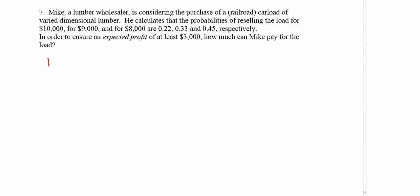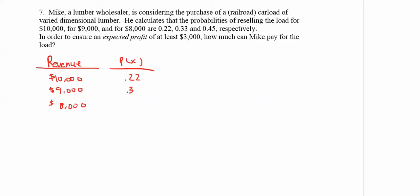So we're going to set up an expected revenue table. Let's list the different revenues we can have: $10,000, $9,000, or $8,000, and the probabilities associated with those are .22, .33, and .45. Notice that when you add up those probabilities, you do get a total of 1, or 100%.